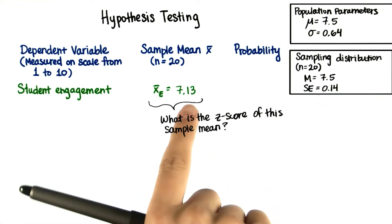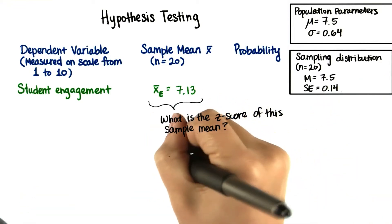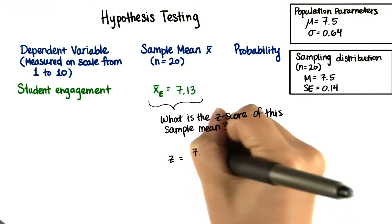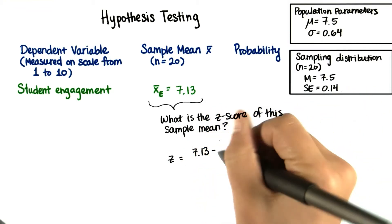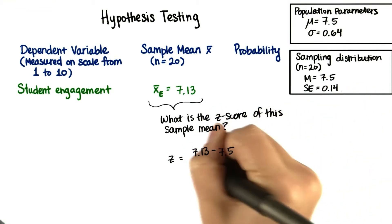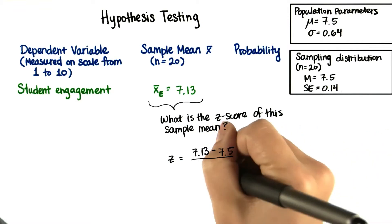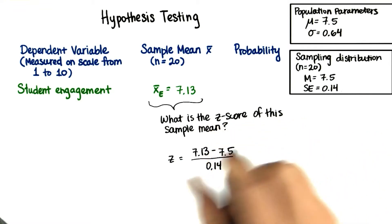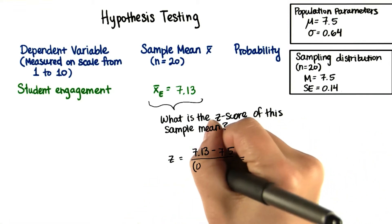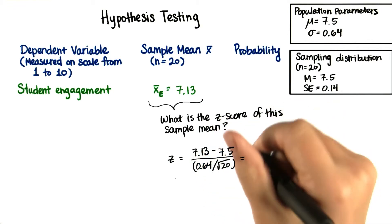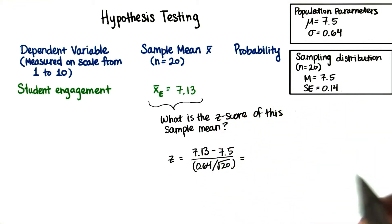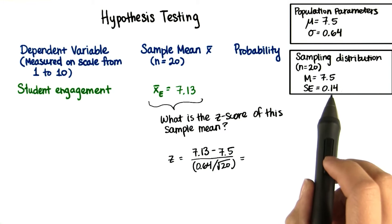So then this means that this sample mean has a z-score equal to 7.13 minus the mean 7.5 divided by 0.14. If you put the more exact values into your calculator, then you'll get a more precise z-score, rather than using the rounded standard error.